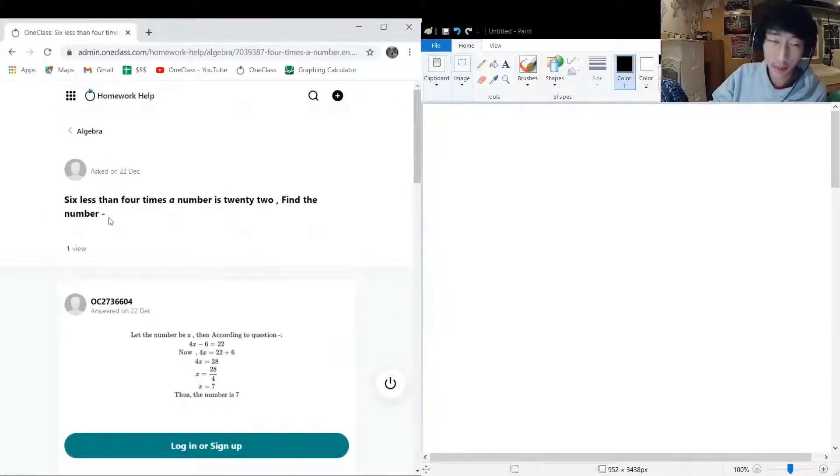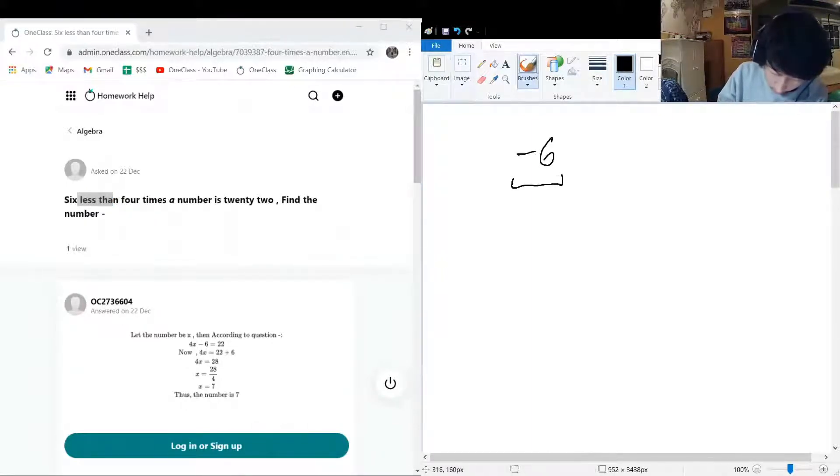Well, we can say a is going to be the number. So six less, so it's going to be minus six. Six less than four times a number, so 4a. Let's say a is our number, because the a is in italics here, so I feel like it'd be nice and fitting.